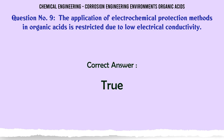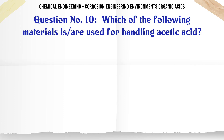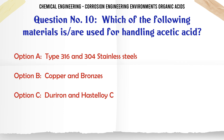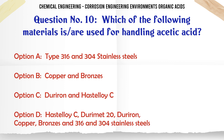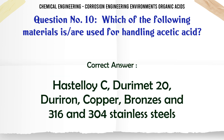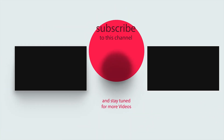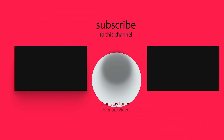Which of the following materials are used for handling acetic acid? The correct answer is Hastelloy C, Durimet 20, Duriron, copper bronzes, and Type 316 and 314 stainless steels.